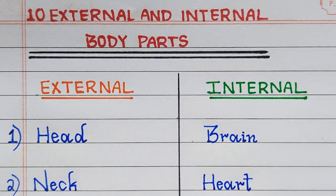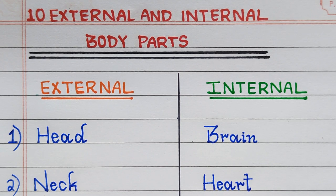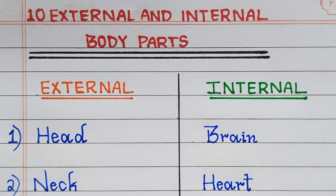First, two examples of external body parts are head and neck. First two examples of internal body parts are brain and heart.